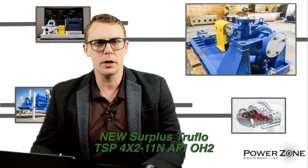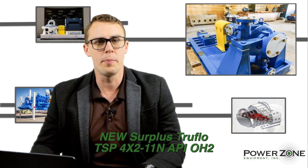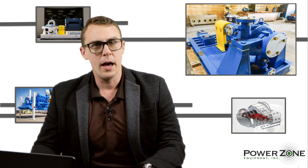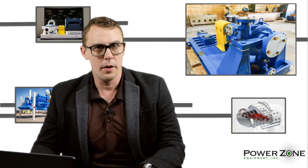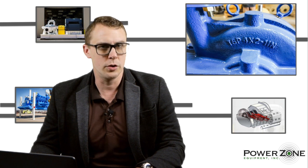In the zone today is this new Surplus TrueFlow TSP 4x2-11N pump from PowerZone Equipment. This has a capacity of 402 gallons per minute at 469 feet of head. The pump runs at 3,600 RPM and includes the following features.